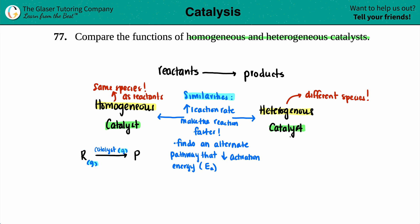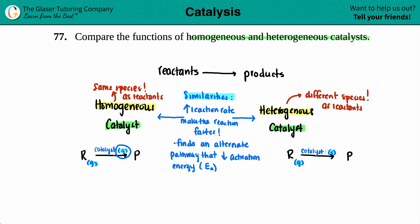A heterogeneous catalyst is a different species from the reactants. So in your reactants-to-products reaction, if your reactants are a gas, a heterogeneous catalyst will generally be a solid. So now you have two different species — that is the difference. Generally speaking, a heterogeneous catalyst will be a solid, which means the reactants will be either gas or liquid. For a homogeneous catalyst, the catalyst has to be the same state as the reactants.